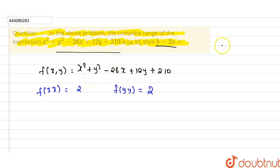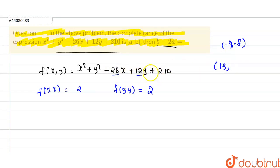We know the critical point is found as: the x-coefficient divided by 2 gives 13 (with the negative already present), and the y-coefficient divided by 2 gives -6. So our critical point is (13, -6).